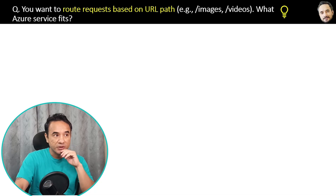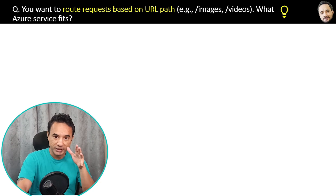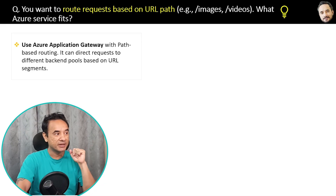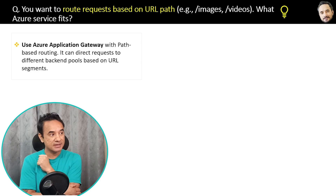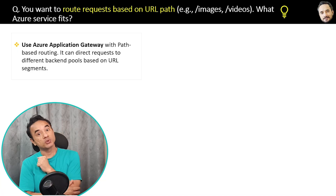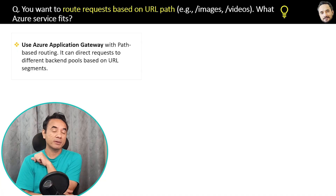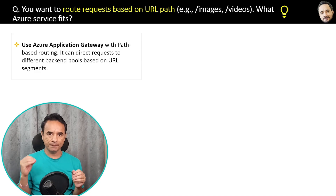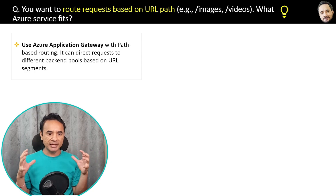If you want to route requests based on URL path, which Azure service would you use? Use Azure Application Gateway with path-based routing — it can redirect requests to different backend pools based on URL segments. You can also use Azure Front Door, which is an all-in-one service with many more features, though it is more costly. For this specific question, Azure Application Gateway is the most direct answer.